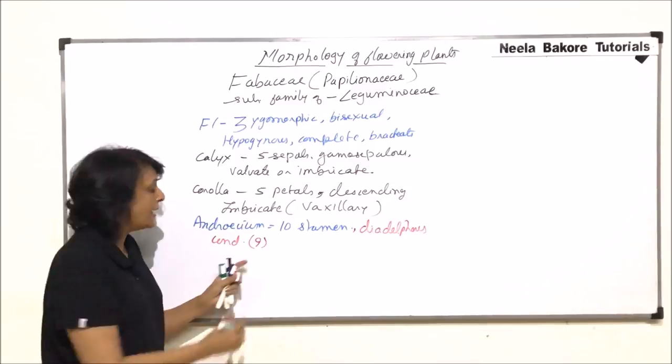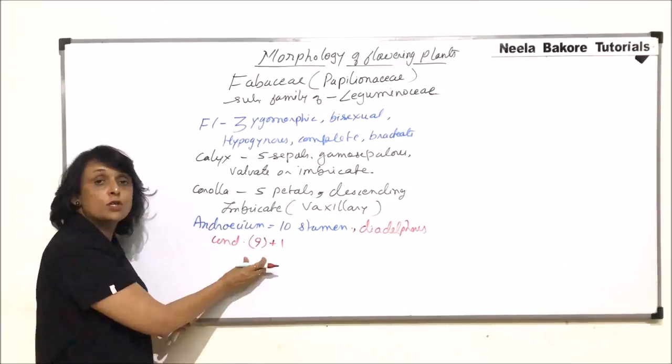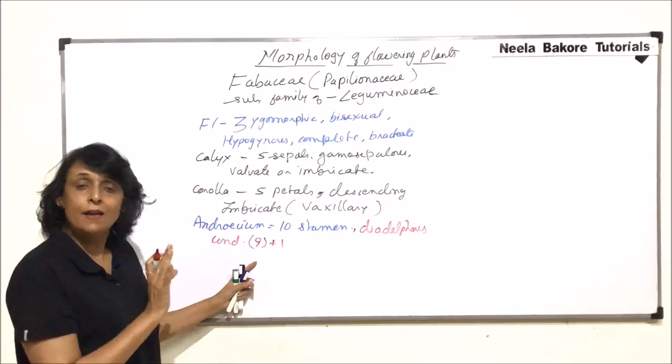Diadelphous condition means adelphous word is used when only filaments are fused. Adelphous word means filaments fused. Di means two. That means out of these 10 stamens the filaments are fused to form two bundles. How are these bundles formed? Nine stamens are fused to form one bundle. So we put these nine in one bracket. And one is free.